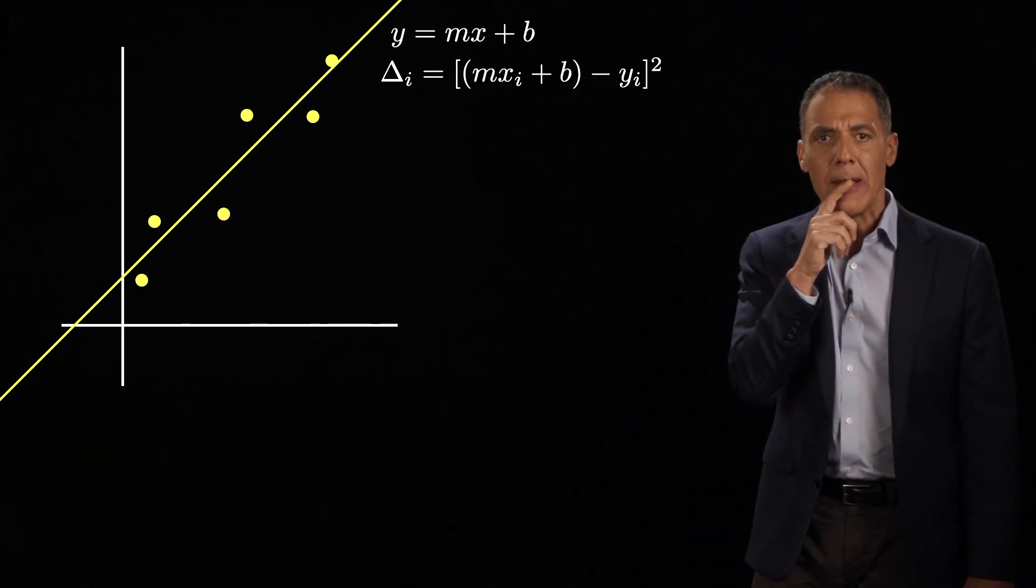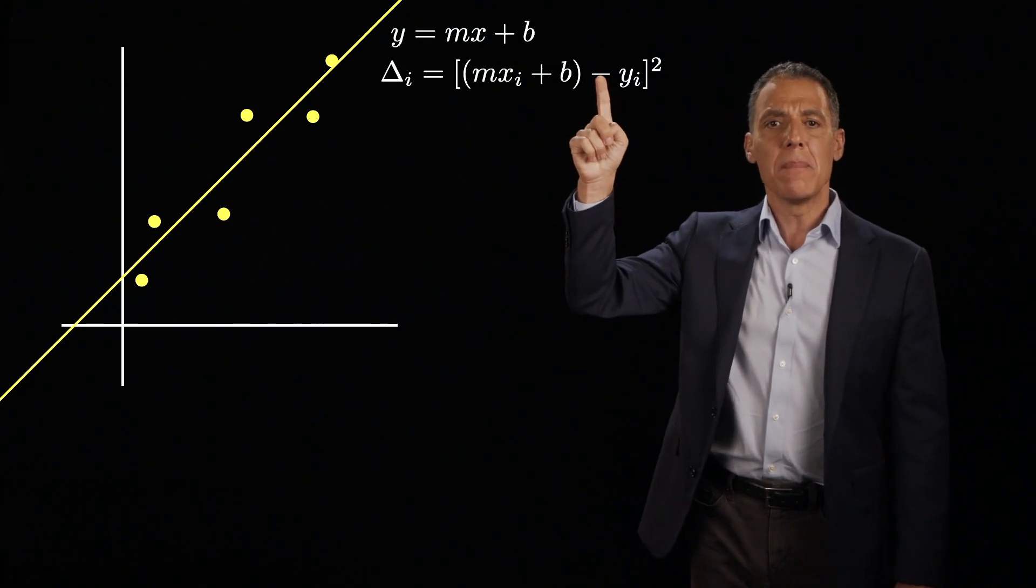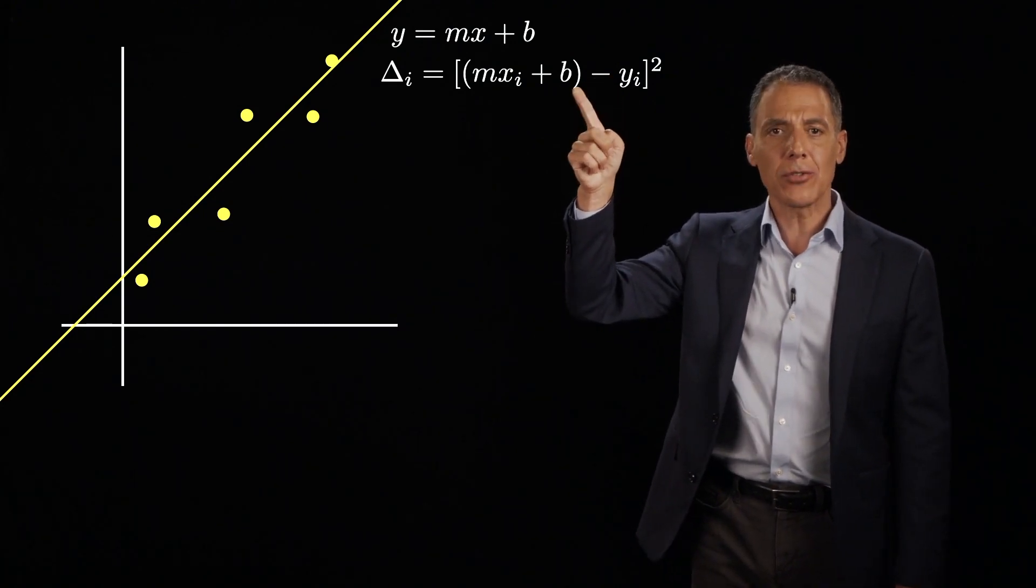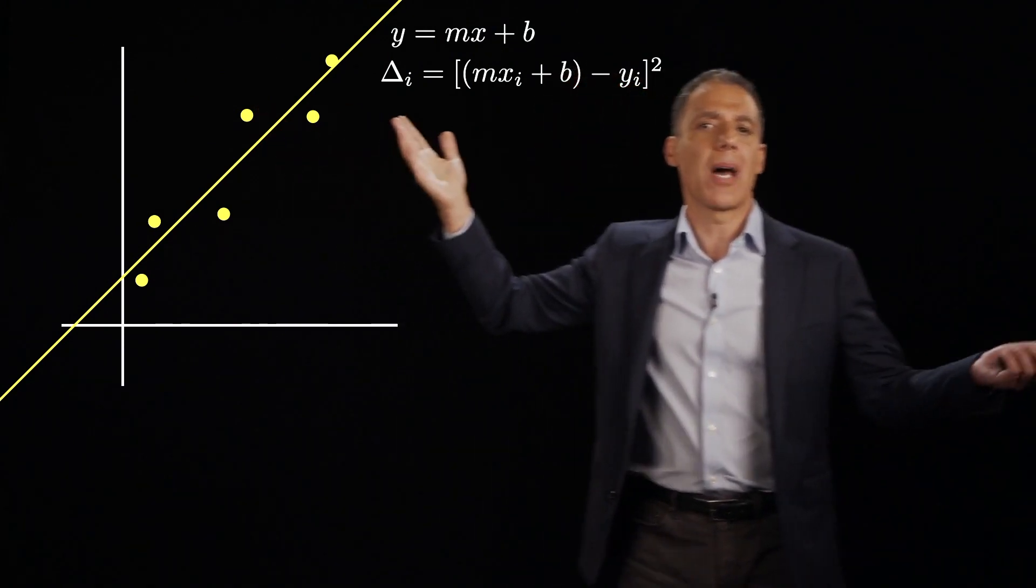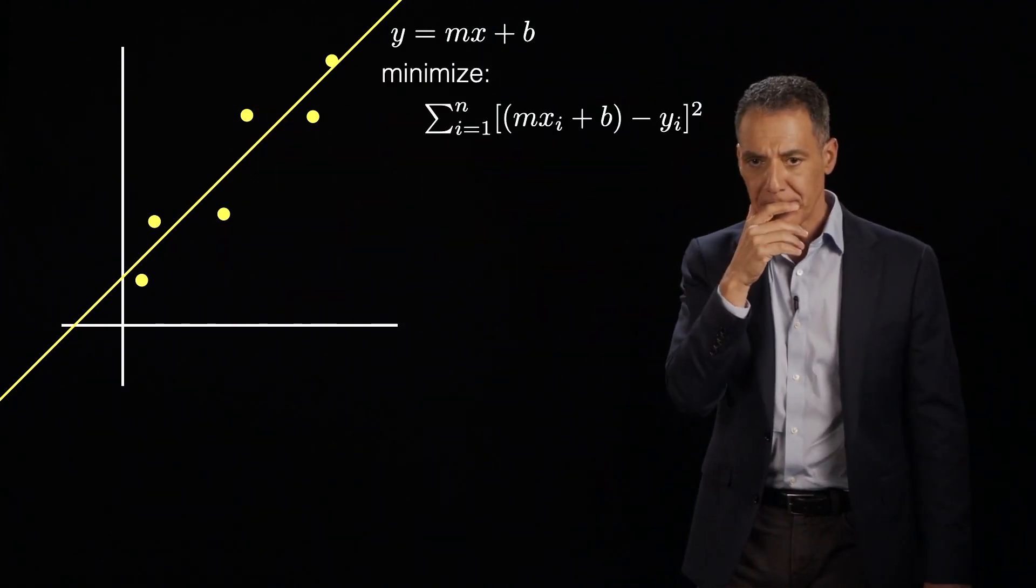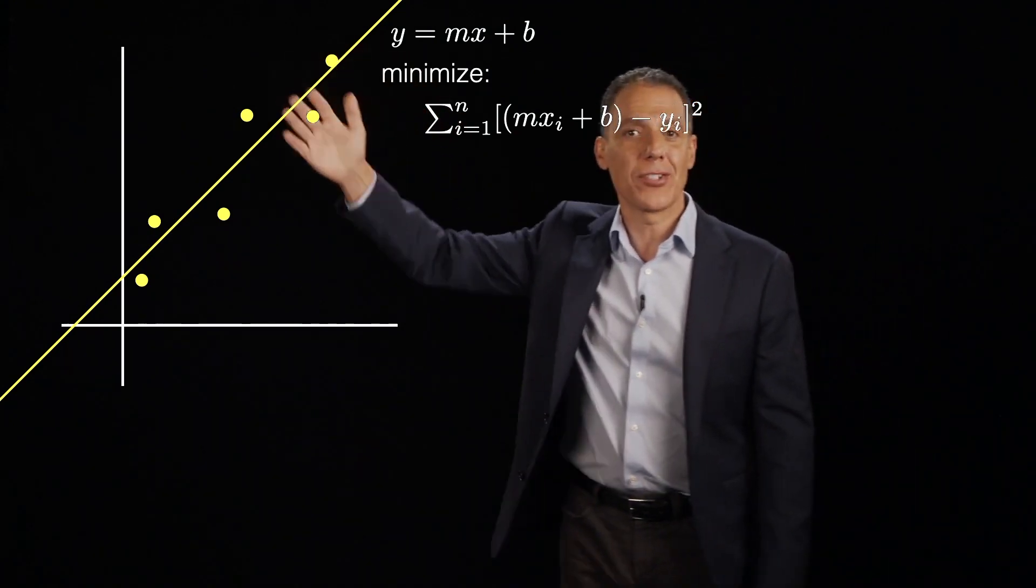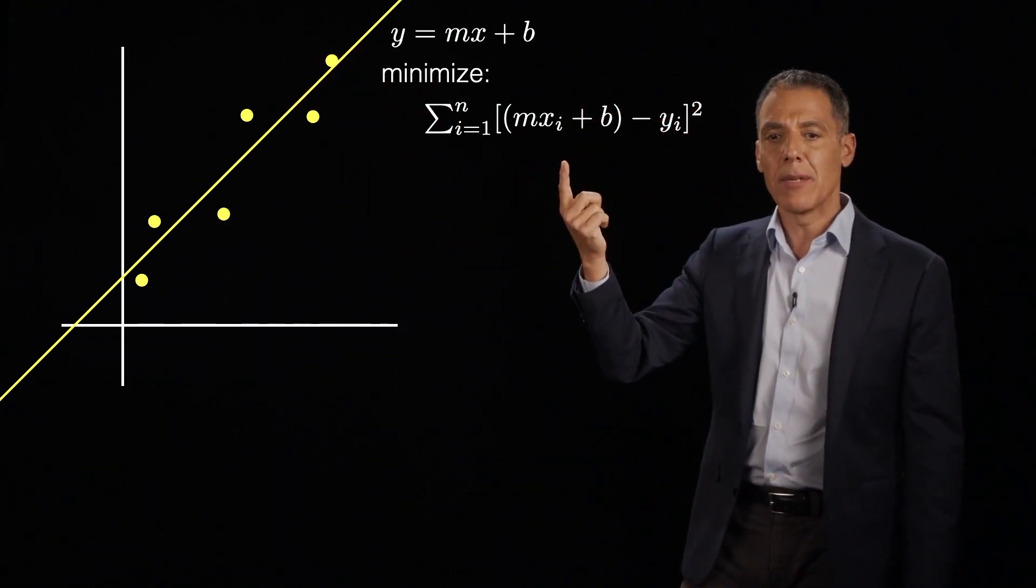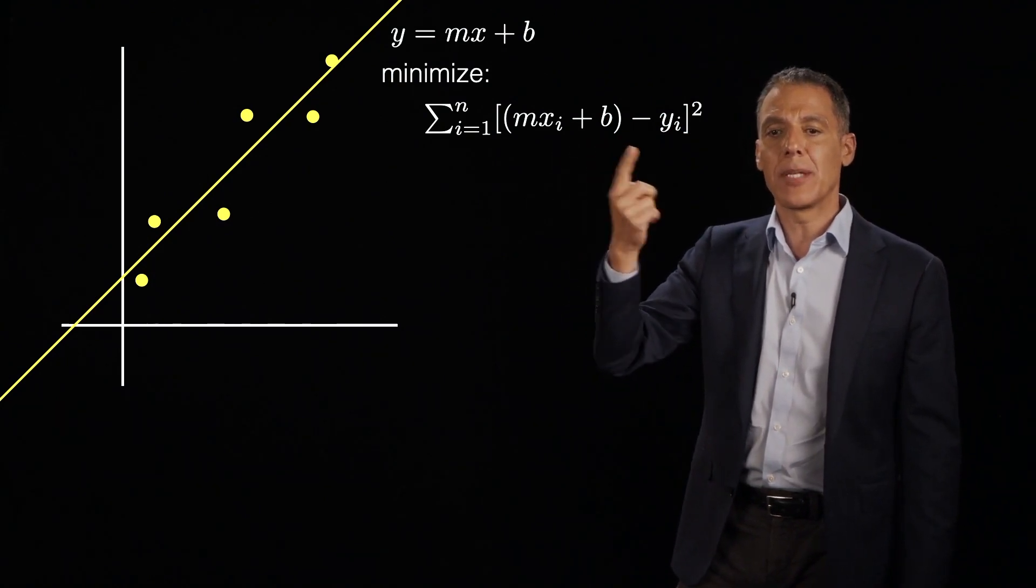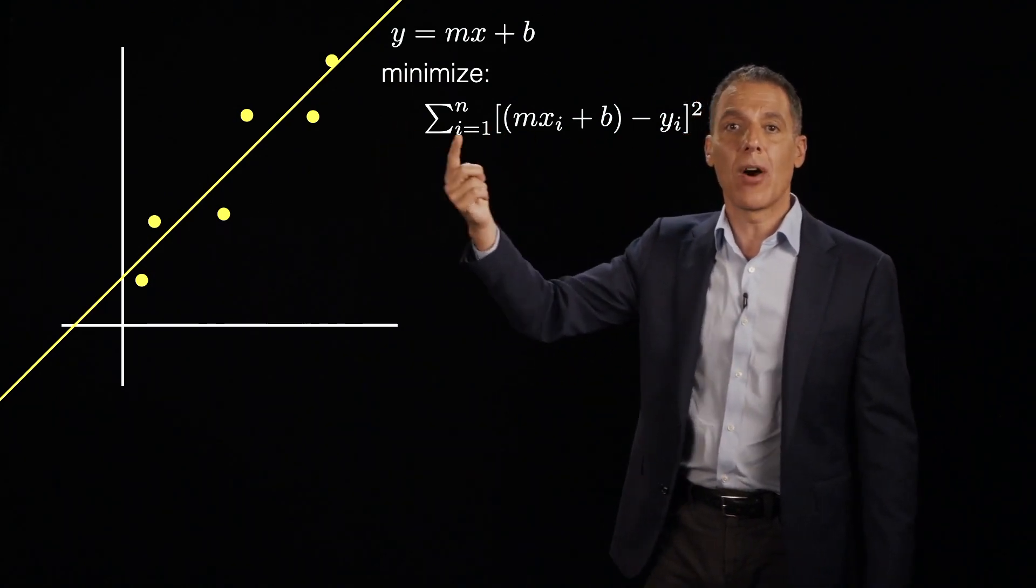So now we have an objective, which is to please minimize this vertical distance between each data point and the model. In this case, the model is just a line. Now, of course, we want to do that for all the points, not just the one point. And so maybe now what I want to minimize is not just mxi plus b minus yi, but the sum of all those.